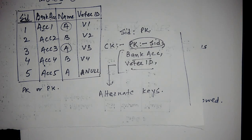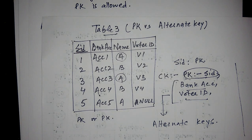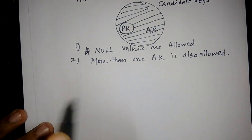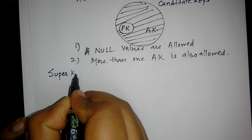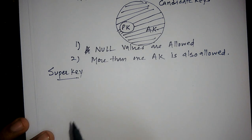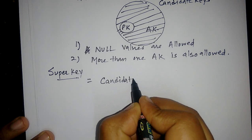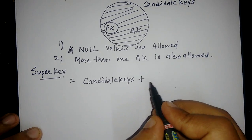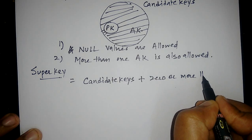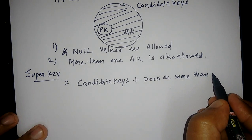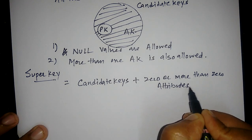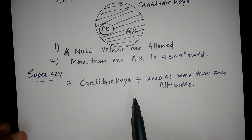There is also a rule for a table to be followed: there should be at least one candidate key which has no null values. Therefore, for a table to exist, we must have at least one primary key to identify each tuple uniquely. The next part is super key. As per the definition of super key, super key equals candidate keys plus zero or more additional attributes. We will discuss this in the next lecture.